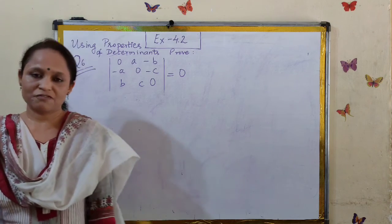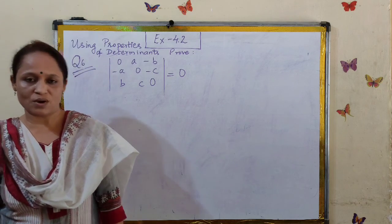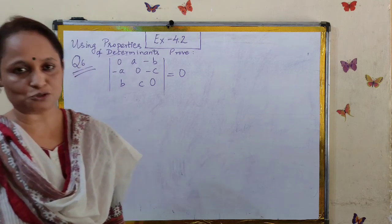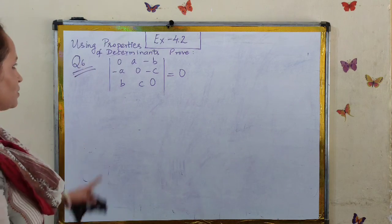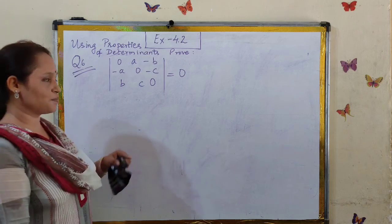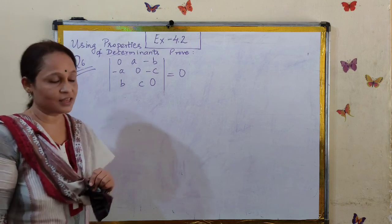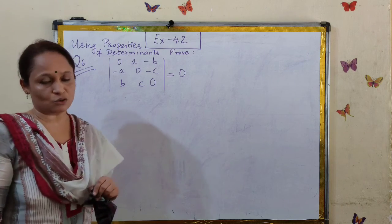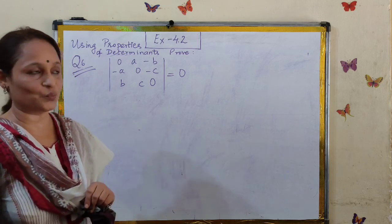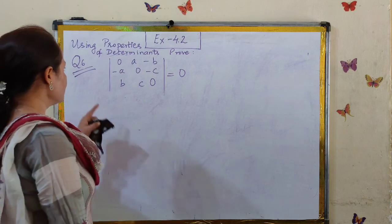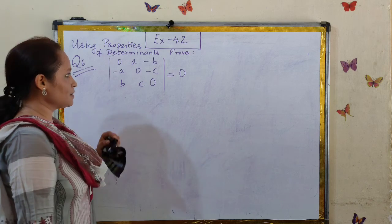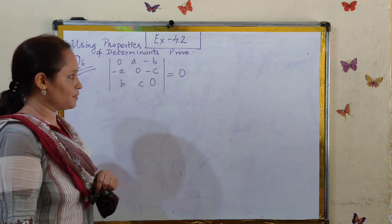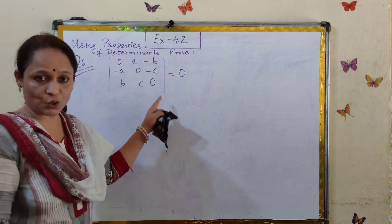Hello children. We have finished with question number 1 to 5 of exercise 4.2 using properties of determinants in the previous videos. In this video we will continue with question number 6 onwards. We have question number 6, and we have to prove that the value of the determinant is 0.